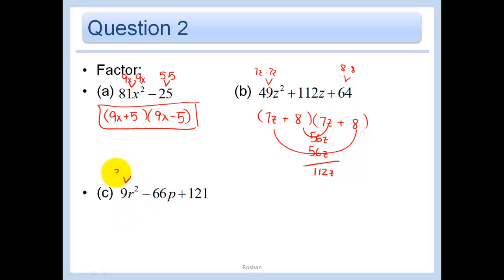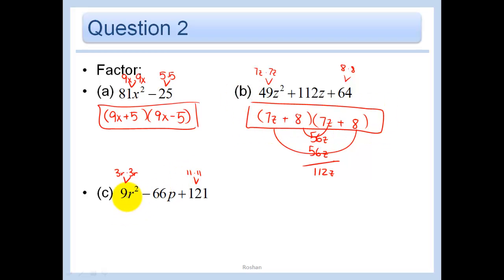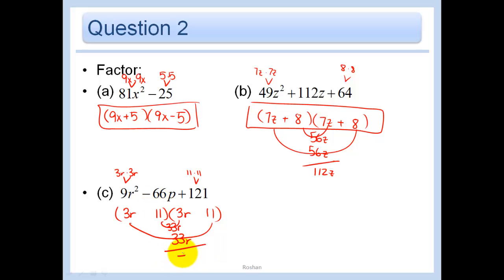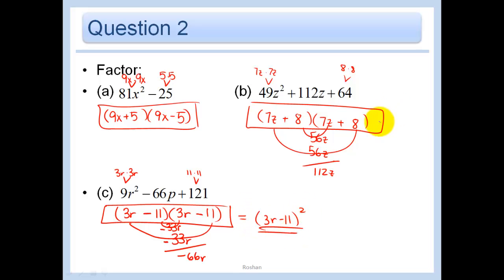Let's try this one. I notice a perfect square here and also a perfect square here. When they're perfect squares, it doesn't mean they always have to be either the difference of two squares or a quantity squared - but since these are problems from the book, they all turn out so pretty. So 3r and 3r, 11 and 11 - let's see if that works. That's 33r and 33r, and we want negative 66r. So that would be a negative and a negative. Negative 11 times negative 11 is positive 121, so that works too. And you could just write this as 3r minus 11, the quantity squared.